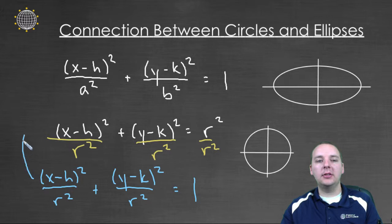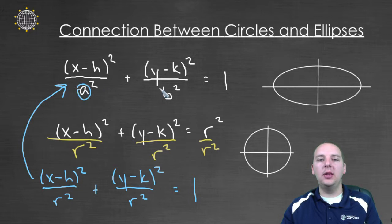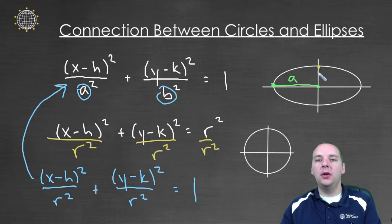Okay, so that actually looks very similar to an ellipse. But now think about it. What were the a and the b identifying back here in this equation of an ellipse? The a was the length from the center out to the vertex along the major axis, and the b value was the distance from the center out to the co-vertex on the minor axis.